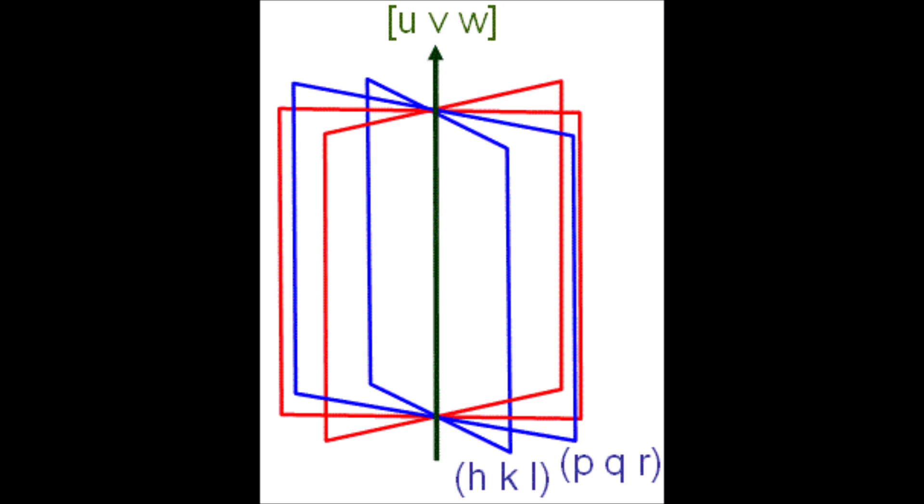And the black arrow that's pointing upwards is a crystallographic direction, which again has Miller indices. We use square brackets to denote it because it is a direction and not a plane.